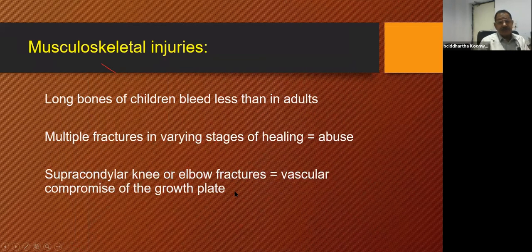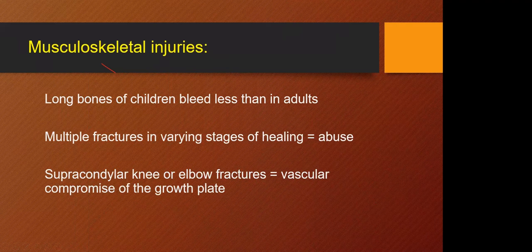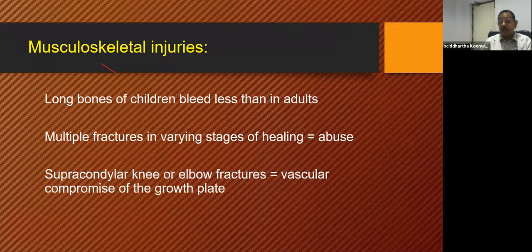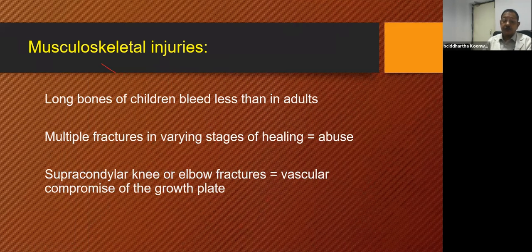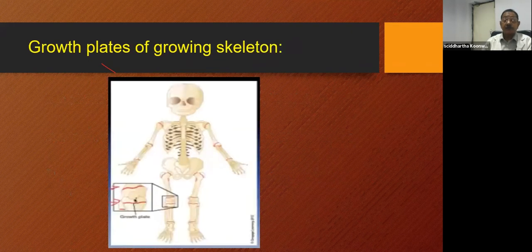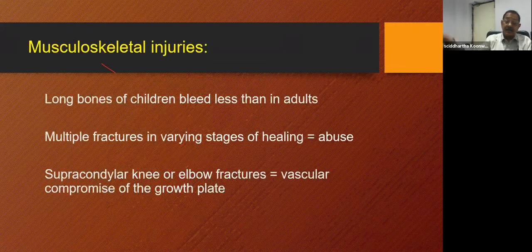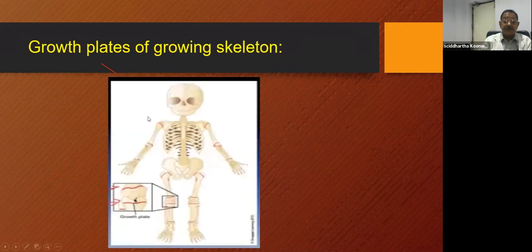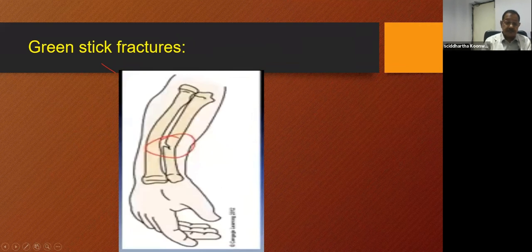In musculoskeletal injuries, long bones of children bleed less than in adults. Multiple fractures in varying stages of healing should alert you to possible child abuse. In supracondylar, knee, or elbow fractures, vascular compromise and growth plate injury should be assessed, as the epiphyseal plate is present at the ends of long bones and injury in these vicinities may hamper growth. Greenstick fractures are common.